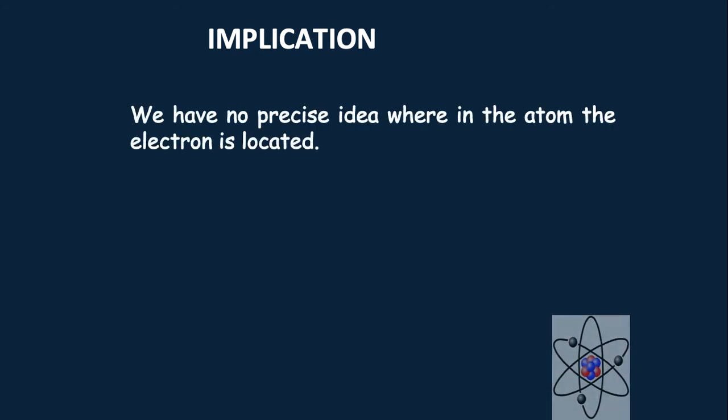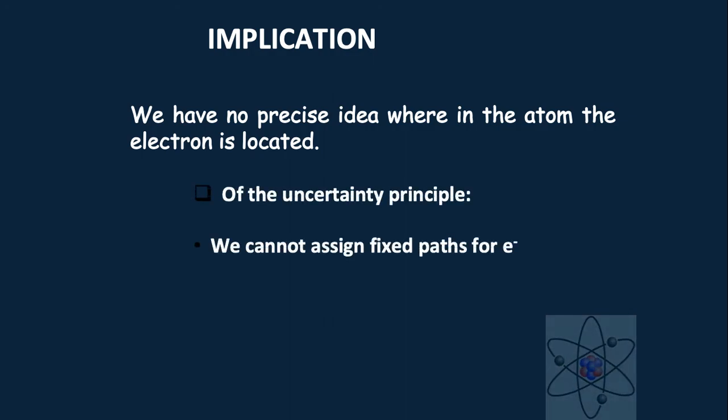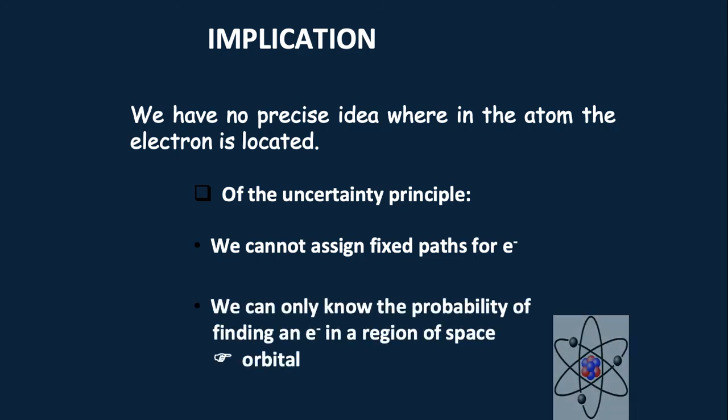The implication of this principle: we have no precise idea where in the atom the electron is located. Of the uncertainty principle, we cannot assign the fixed path for electron. We can only know the probability of finding an electron in a region of space, also known as the orbital.